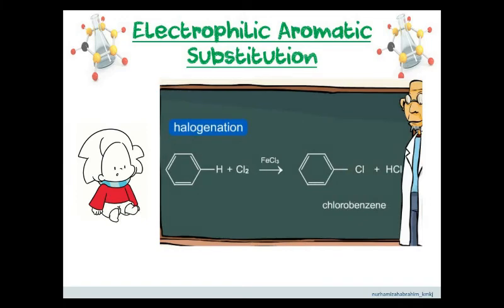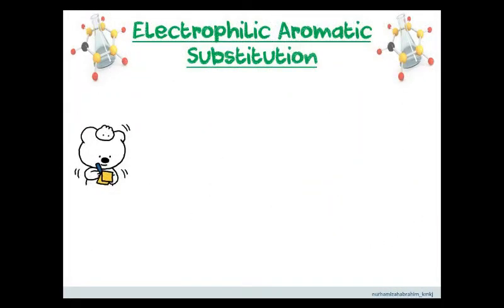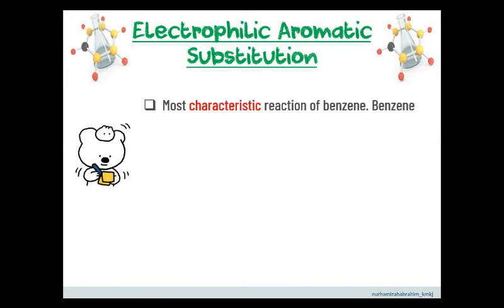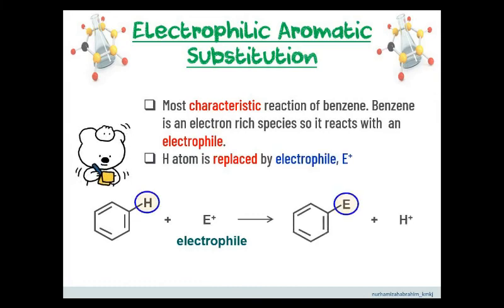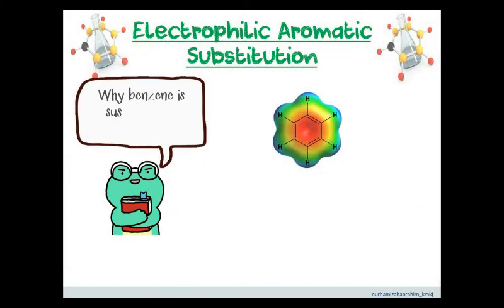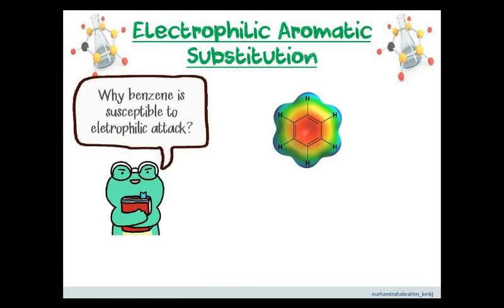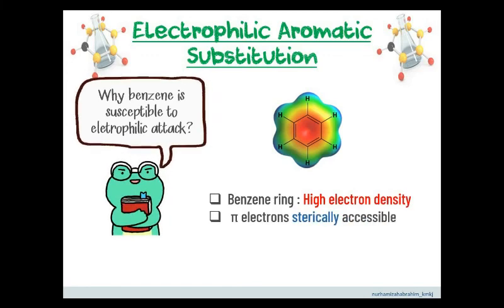During this lesson, we will study more closely the individual steps of an electrophilic substitution reaction. Electrophilic aromatic substitution is the most characteristic reaction of benzene. Benzene is an electron-rich species, therefore it reacts with an electrophile, where the hydrogen atom at the ring is replaced by the electrophile E+. Benzene is susceptible to electrophilic attack because the benzene ring contains a high electron density, and the pi electrons are sterically accessible to attack.